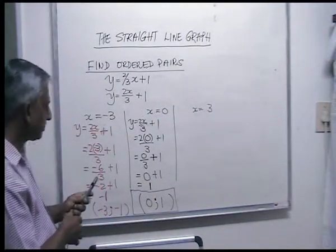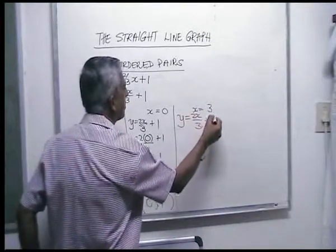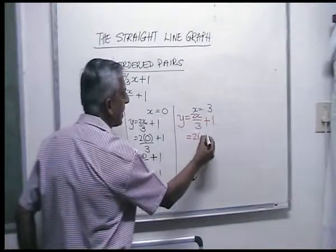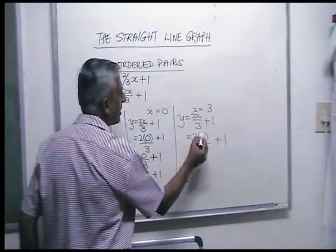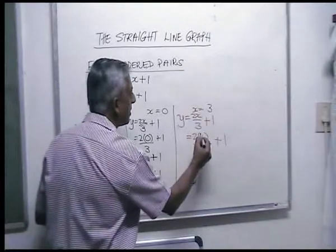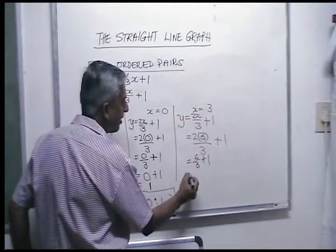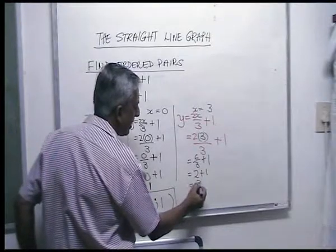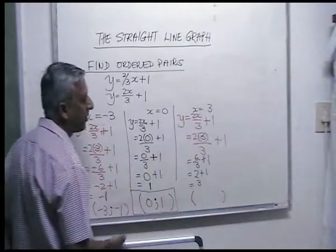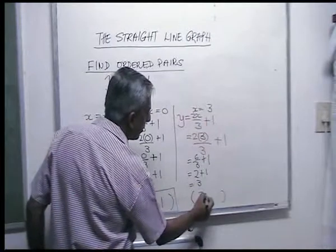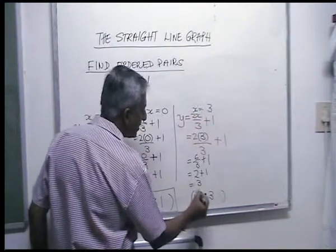For x is three: y is equal to two x over three plus one, so two times three is six. Six over three plus one: six divided by three is two, two plus one is three. Your ordered pair is three, three.